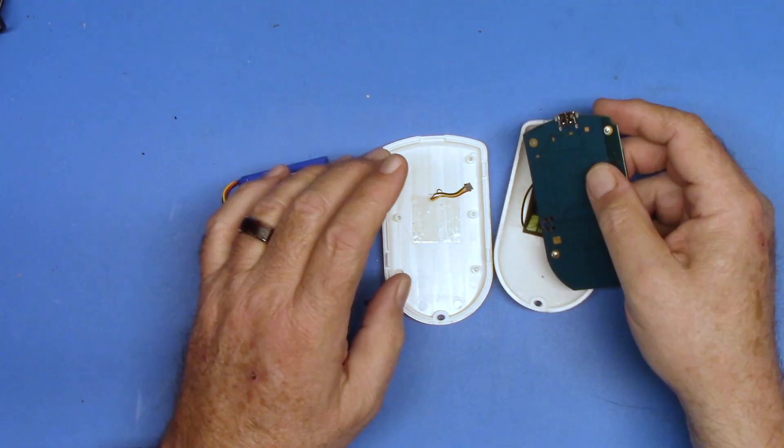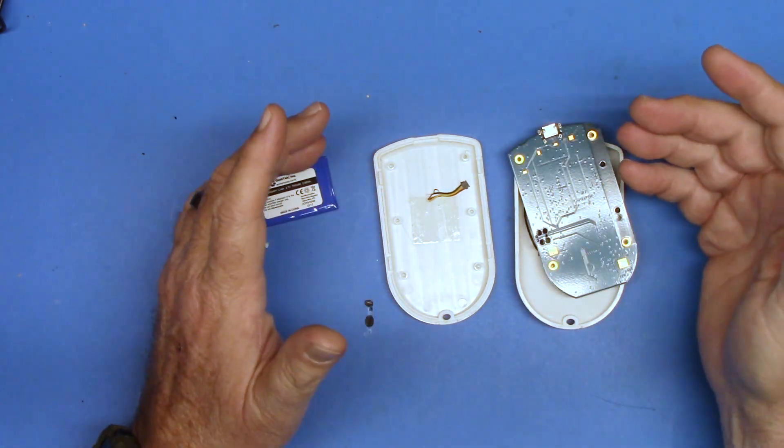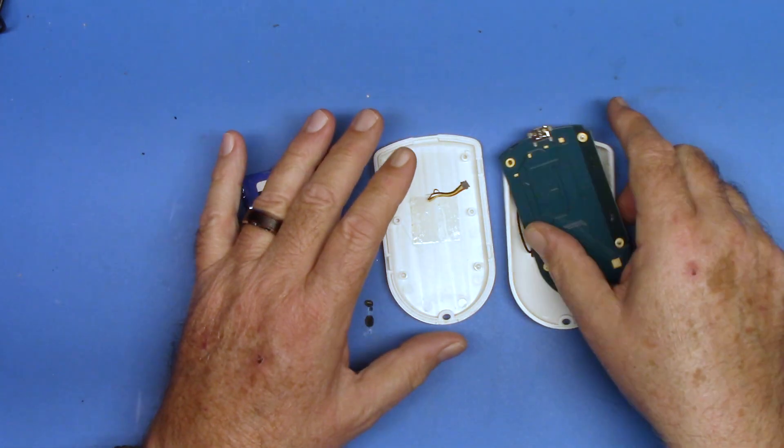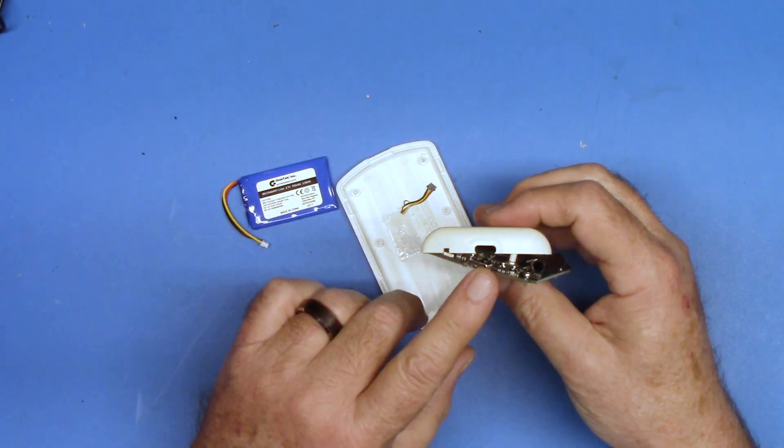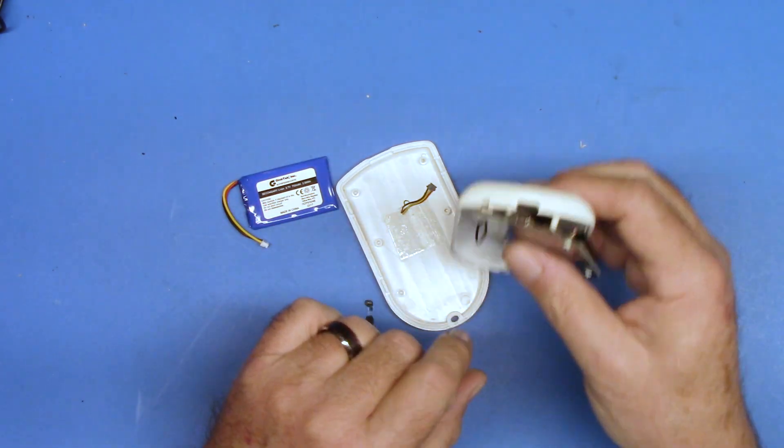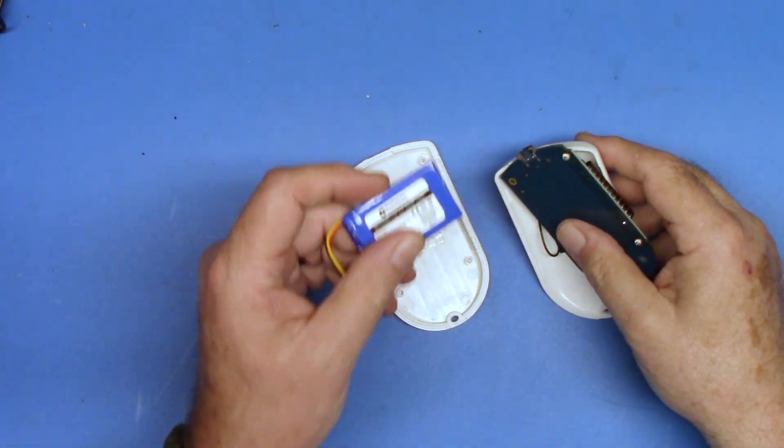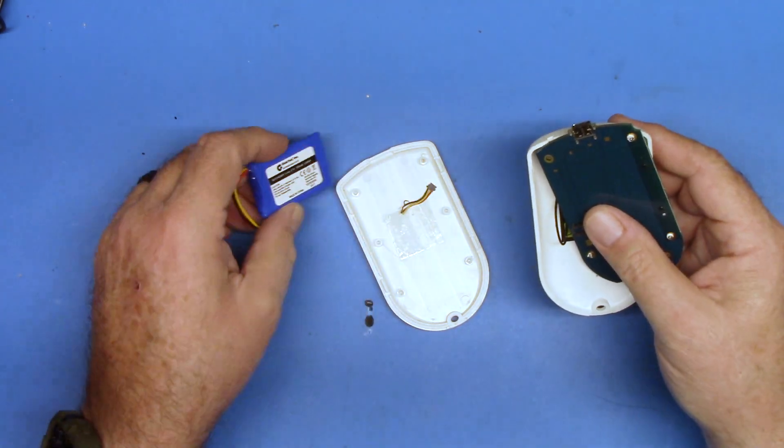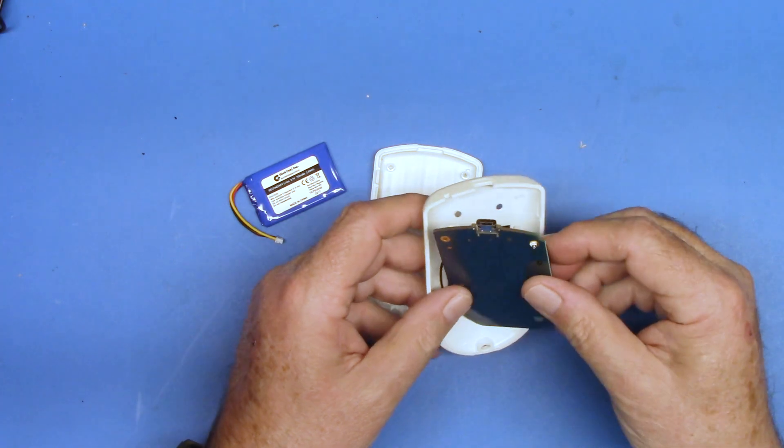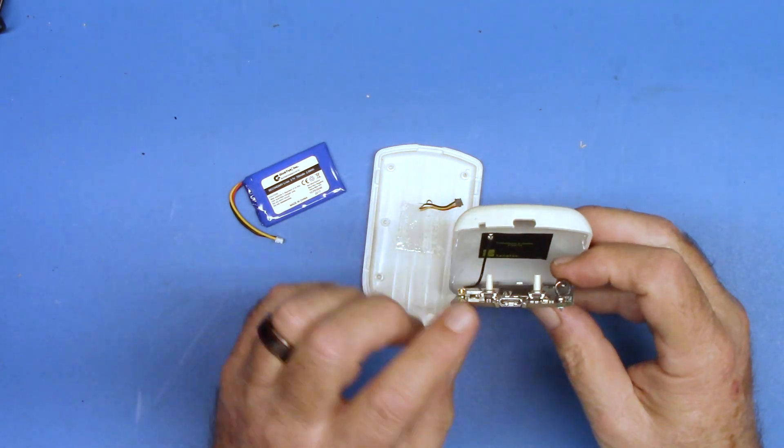Now I don't necessarily have to replace the battery. The device works fine and you can absolutely just run this from USB-C. And if this battery doesn't work, and I've had a difficult time finding a battery that would apparently fit in this, you can absolutely run this from USB-C.